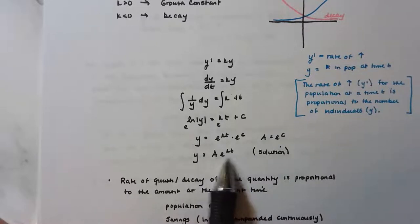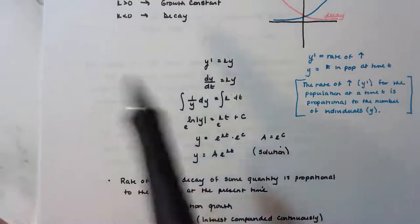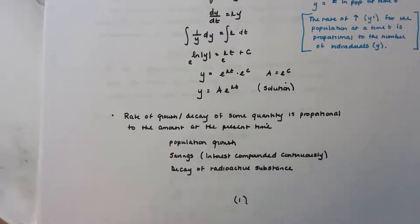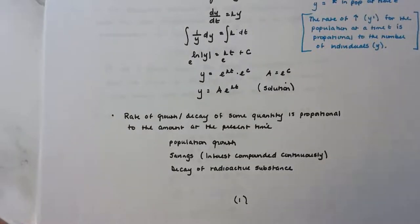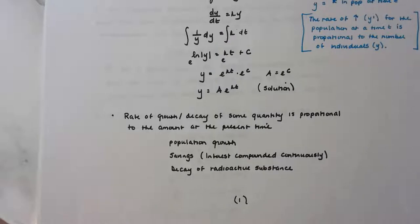The solution to the differential equation represents exponential growth or decay: the rate of growth of some quantity is proportional to the amount at the present time. For example, if we start with 500 bears in Alaska, our initial condition is y(0) = 500. We use these equations for population growth, continuous compound interest, or decay of radioactive substances.